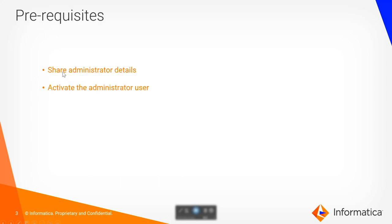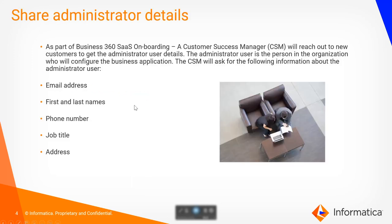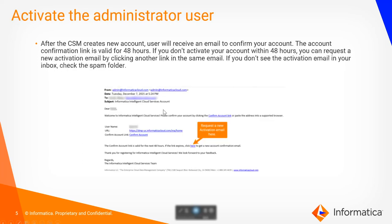The prerequisites are shared details of the administrator of the org, followed by the activation of that particular administrator user. As part of Business 360 SaaS onboarding, a customer success manager will reach out to the new customer to get the details of the administrator user, and once we have the details, a new org administrator user will be created in the org.